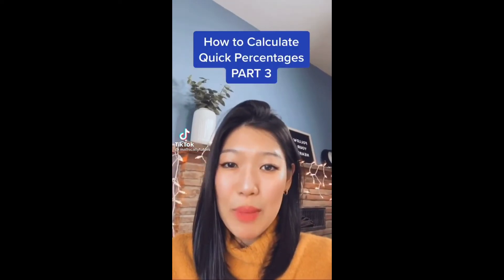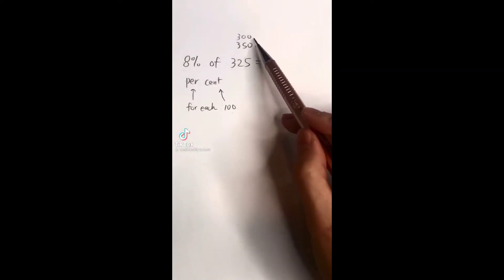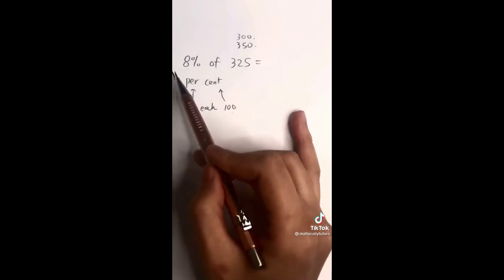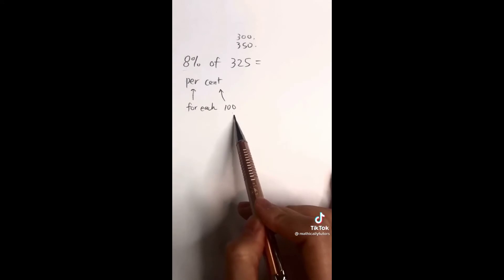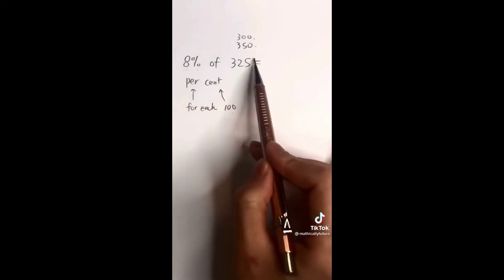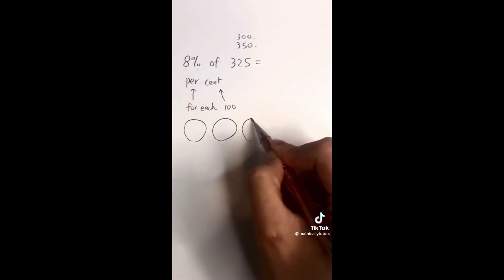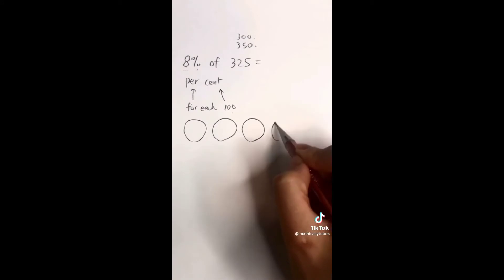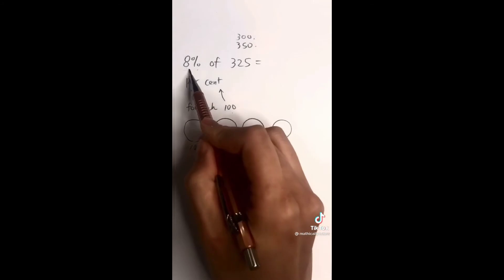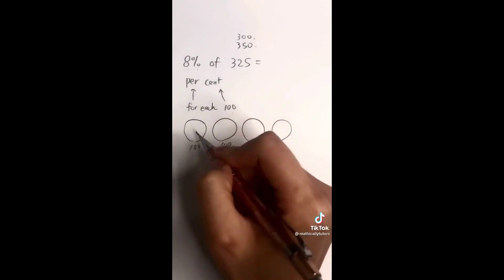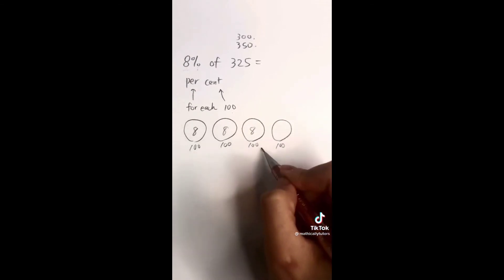How to calculate quick percentages, part three. Instead of 300 or 350, let's take eight percent of 325. We know percent means 'for each 100,' so there are eight in each 100. How many hundreds do we have? Let's draw that out: 100, 200, 300 — not enough — so we add a 400 and label it. We know there are eight per 100, so we fill in eight here, here, and here, making up 300.